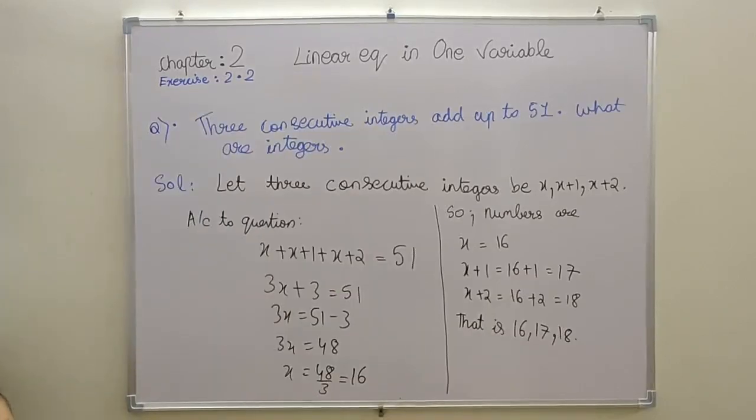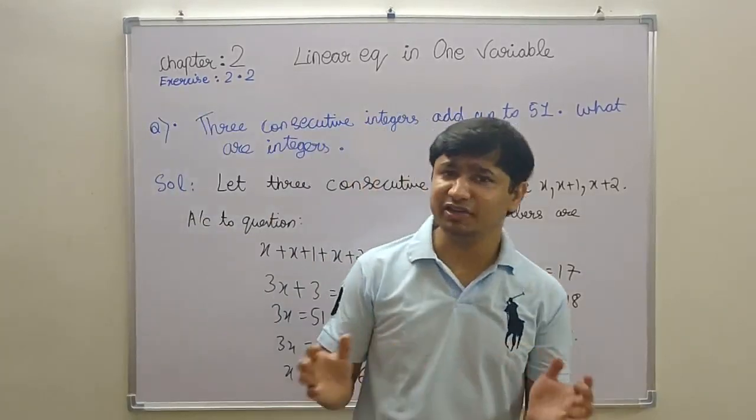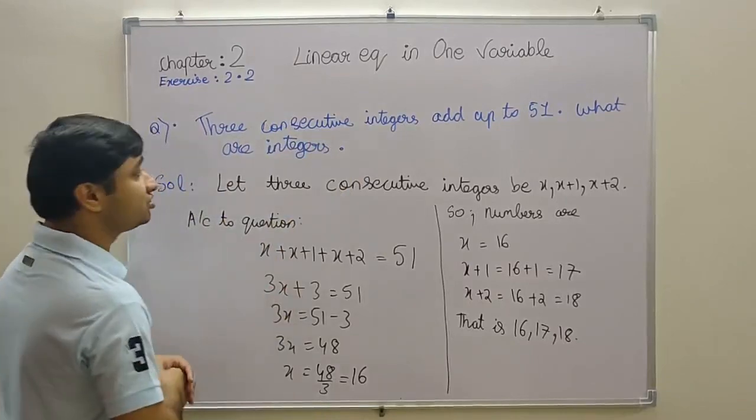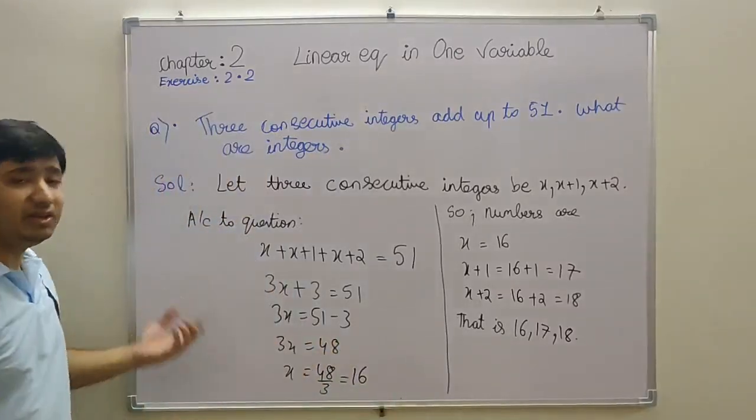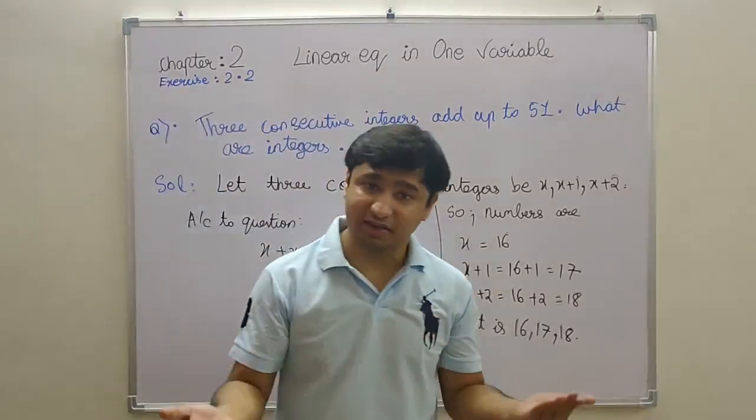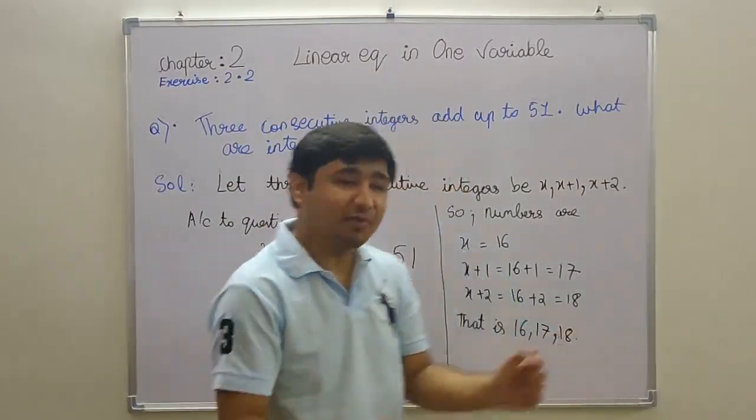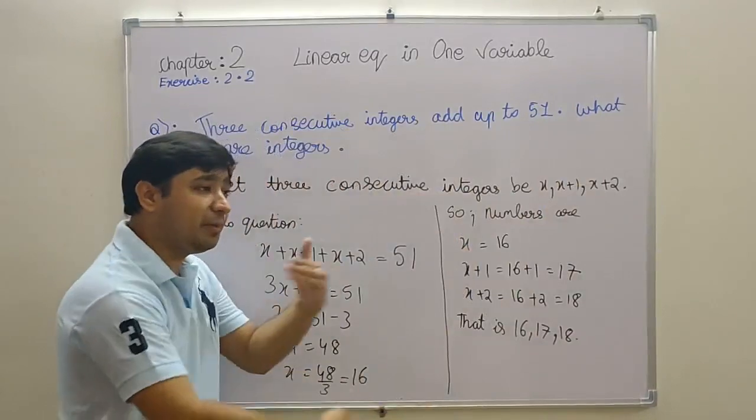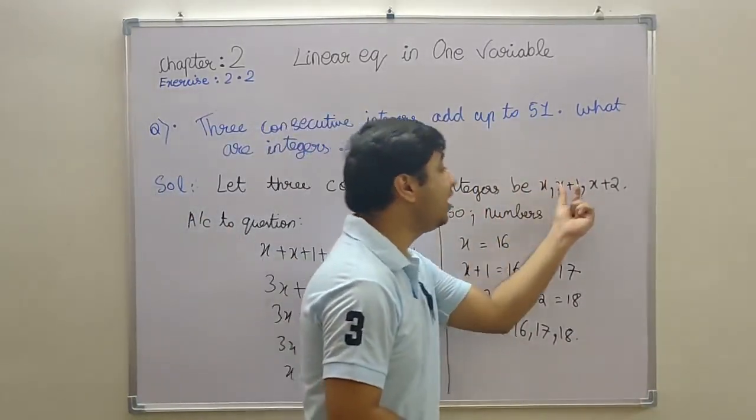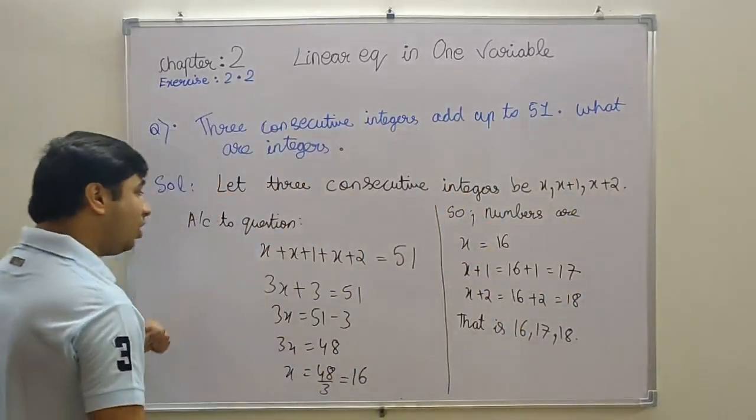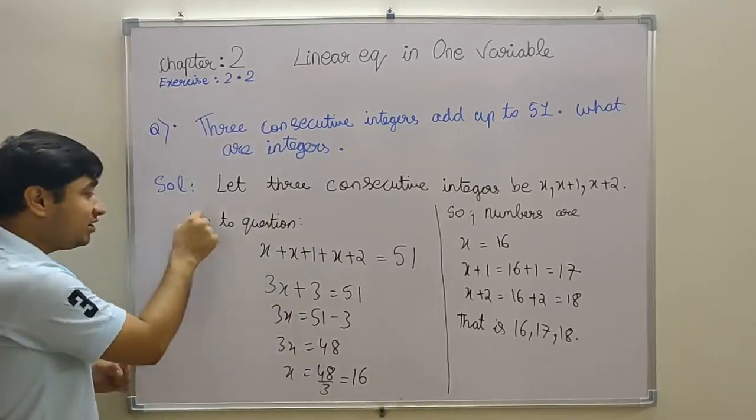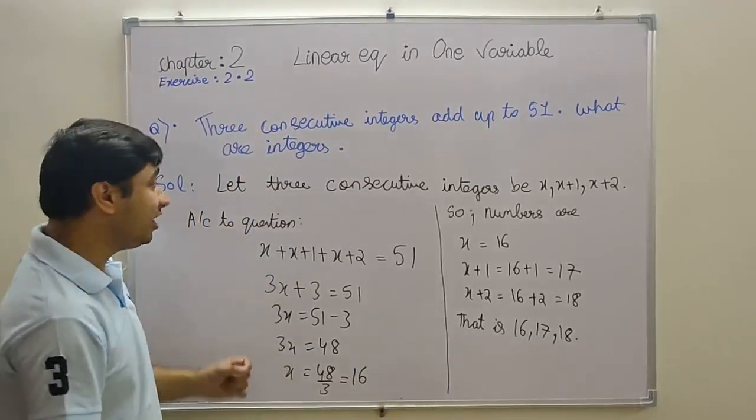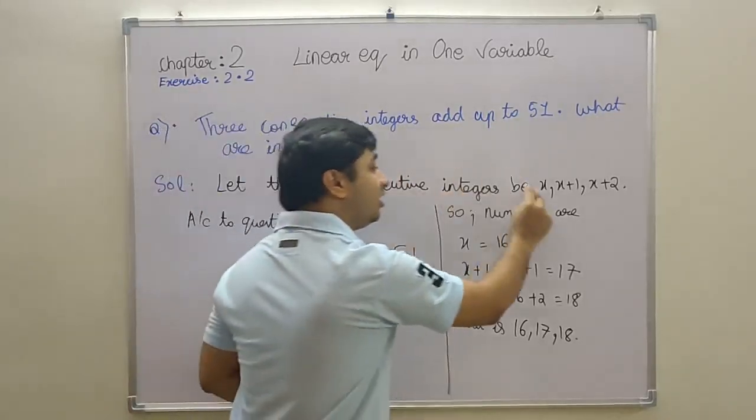Moving to our next question. The next question is something related to integers: three consecutive integers add up to 51. What are the integers? Consecutive, what is that? Consecutive means one after another. Sunday after Monday, Monday after Tuesday. Same as it is, let the three consecutive numbers be x, x + 1, and x + 2. One after another: first is x, second is x + 1, third is x + 2. Now, according to question—did anyone notice? I'm writing A/C, what is that? 'According.' According is shortened as A/C, okay?